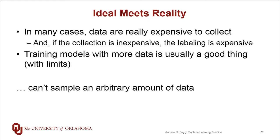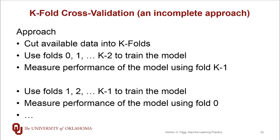Fundamentally, this means we can't get all the data we really want to do a proper independent model building and testing process. The fallback position is something called cross-validation. What I'm going to present right now parallels what you see in your book, but it is actually an incomplete story — it leaves out some important points that we'll address in a few weeks. The approach the book talks about is one where we take our dataset and cut it into some number of essentially equal-size pieces called folds.